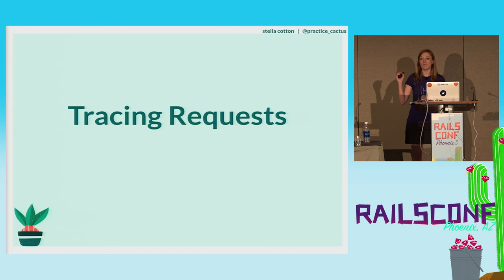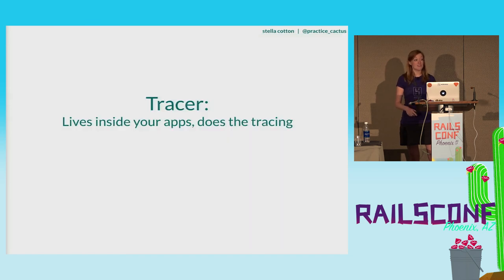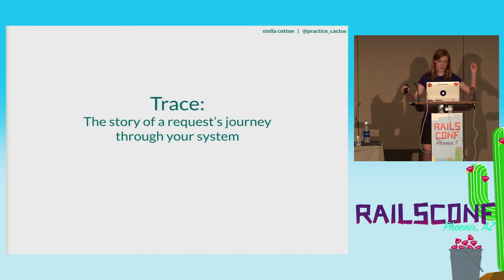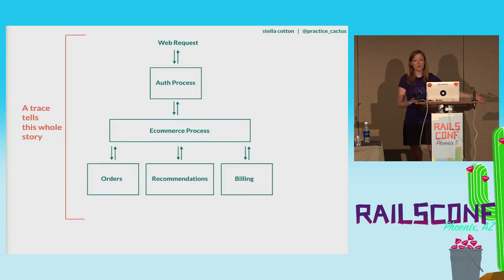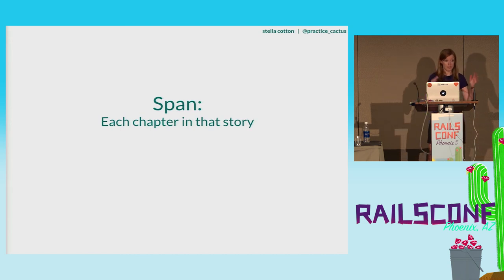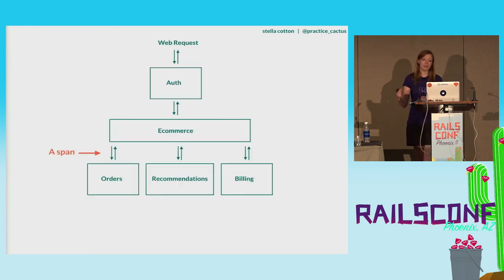The tracer lives inside your application. In the Ruby world, it's installed as a gem, just like any other performance monitoring agent. A tracer's job is to record data from each system so that we can tell a full story about your request. You can think of the entire story of a single request lifecycle as a trace. Within a single trace are many spans — a span is a chapter in that story. Our e-commerce app calling out to the order service and getting a response back is a single span. Any discrete piece of work can be captured by a span; it doesn't have to be a network request.